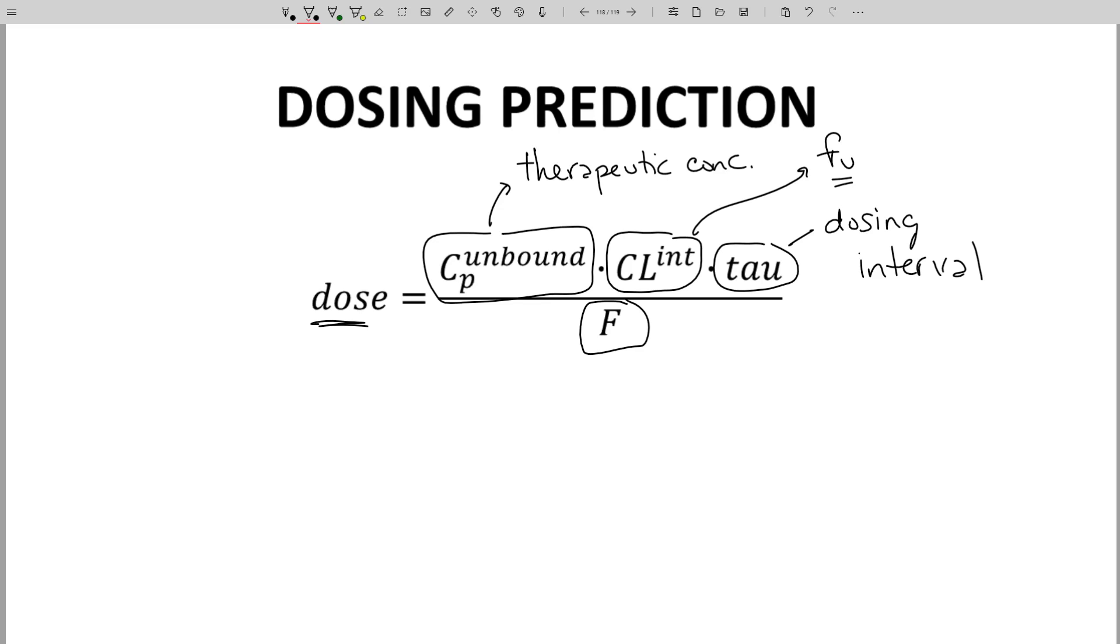Tau is a dosing interval. It's the time between doses. A larger interval means you'll need a larger dose, a larger dose to maintain CP during the interval dose time.